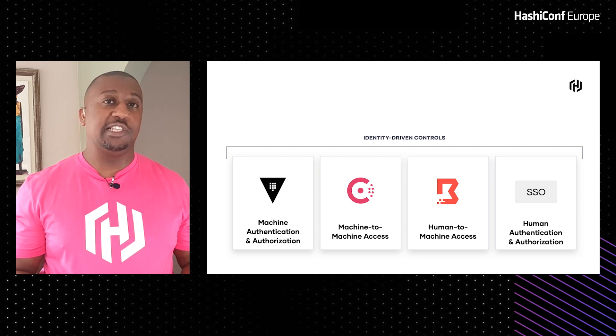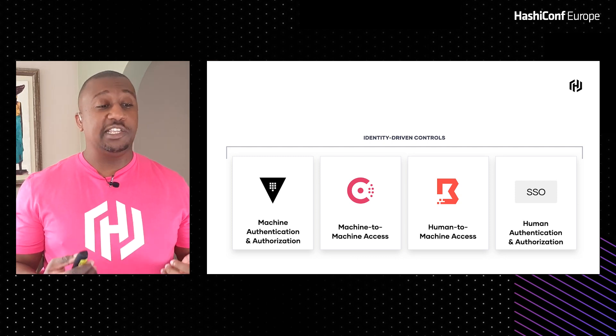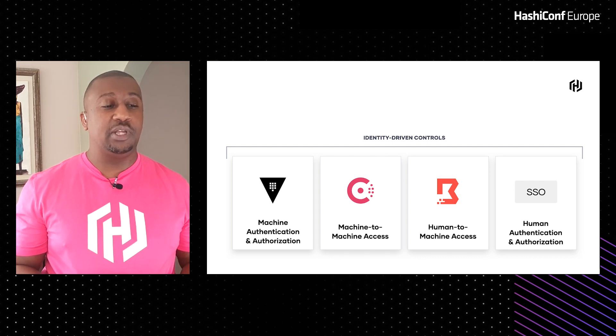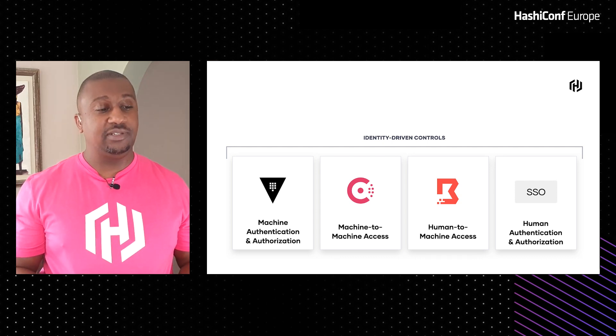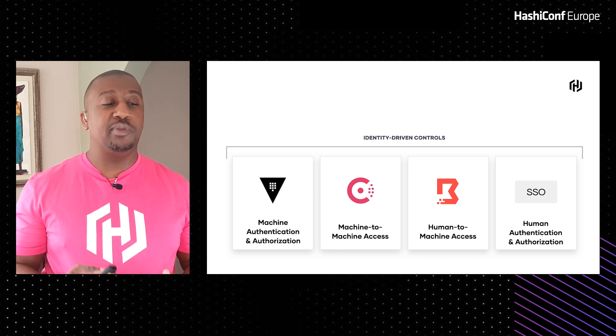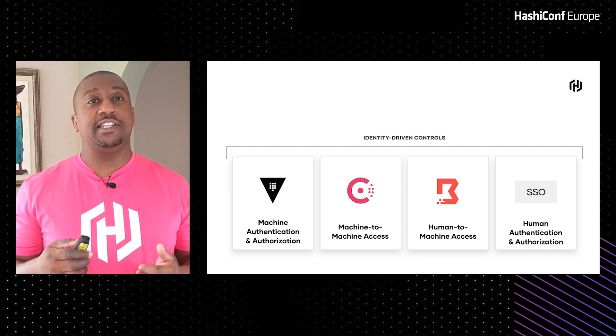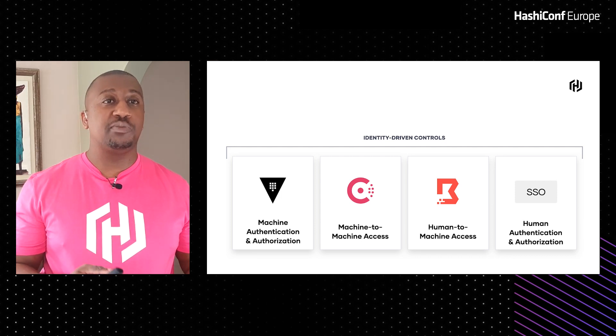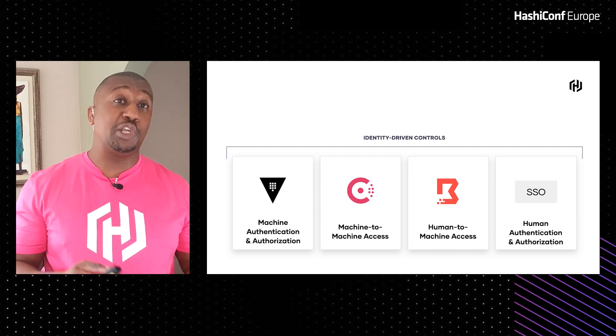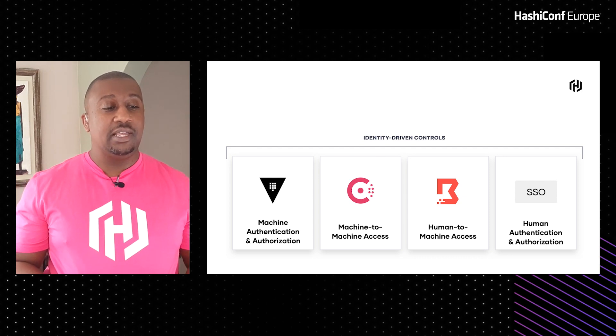To summarize: we've taken a simple but common application architecture, removed the assumption of trust, and implemented controls to verify everything. We can verify the identity of a machine, verify the identity of a human, and verify which machines can talk to which machines and which humans can talk to which machines. This gets us very close to what zero-trust security looks like and significantly improves our security posture. Thank you very much — I'm Rob Barnes, and I hope you found this useful.